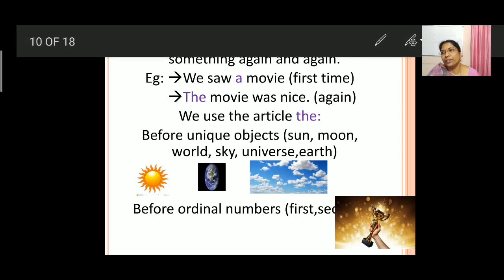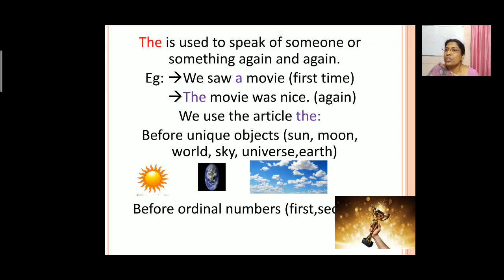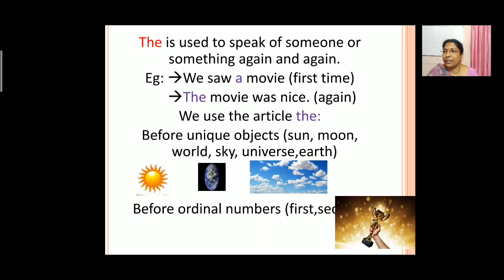Next we will see where 'the' is used. 'The' is used to speak of someone or something again and again. So when we speak of something or someone repeatedly, there we use 'the'. For example: we saw a movie — when telling about it for the first time, you use 'a'. We saw a movie. Again when you are specifically talking about that movie, then we use 'the'. The movie was nice. So when talking about the movie for the second time, we use 'the'.